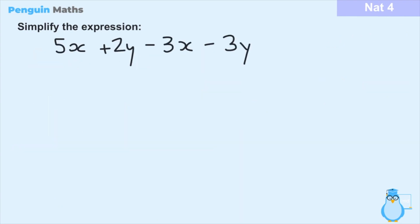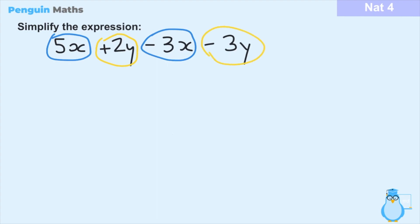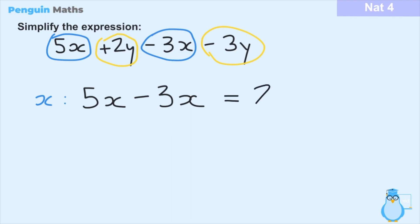Now we've been asked to simplify 5x plus 2y minus 3x minus 3y. The first thing we want to do is identify the variables — we have x and y, so two variables — and then group the terms that share the same variable. This term and this term contain x, and this one and this one contain y. Beginning with the x's: we have 5x and minus 3x. Since we have 5 of x and we're taking away 3, that's 5 minus 3, which leaves us with 2x.